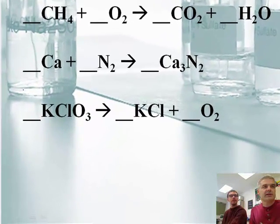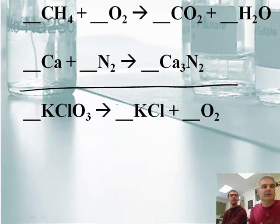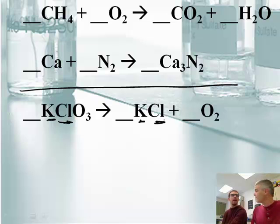I'll just do this one down here. So potassium chlorate is what this is. My Ks. K, 1 there. 1 and 1. Hey, that's good. That is good. Cl, 1 and 1. Yay! We are rocking. Oxygen, 3 and 2.